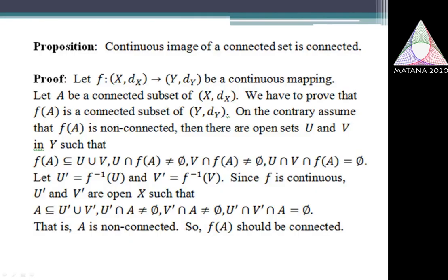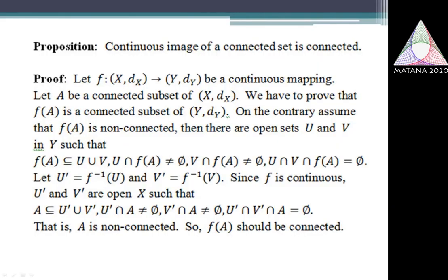One thing to note: even if we restrict the metric from X to A, the definition of connectedness is not affected. A is a connected subset of X if and only if A is a connected subset of A when D is restricted to A. The next result is a classical one: a continuous image of a connected set is connected. I begin with a connected subset A in the domain X of a function F. If F(A) is not connected — i.e., non-connected — I can find two open sets as stated in the definition. Then the inverse images of these open sets satisfy the conditions for non-connectedness of A, which contradicts A being connected. Hence F(A) must be connected.